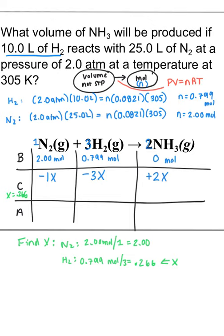We're going to plug that in. So this will be now minus 1 times 0.266, minus 3 times 0.266, plus 2 times 0.266.